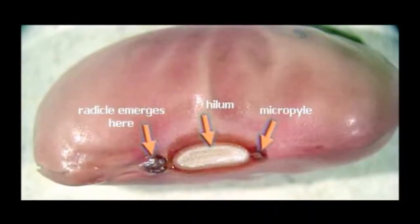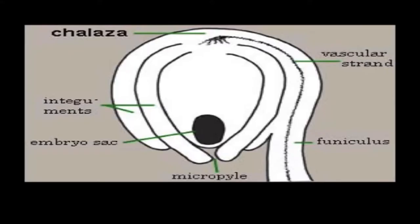Later, when the seed matures and starts to germinate, the micropyle serves as a minute pore through which water enters. The micropylar seed end has been demonstrated to be the major entry point of water during tobacco seed imbibition and germination. During germination, the tobacco testa ruptures at the micropylar end and the radicle protrudes through the micropylar endosperm. Chalaza is the non-micropylar end of the seed and is also the base of the ovule bearing the embryo sac surrounded by integuments.